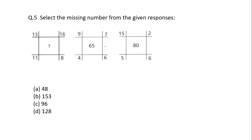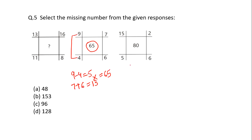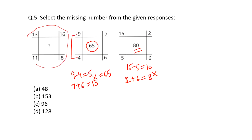Select the missing number from the given responses. Let's find the pattern: 9 − 4 = 5, and 7 + 6 = 13, and 5 × 13 = 65 — that is the middle number. Also, 15 − 5 = 10, and 2 + 6 = 8, and 10 × 8 = 80. So the same pattern is followed: 30 − 12 = 18 — wait, 30 − 12 = 18 and 16 + 8 = 24, so the middle number is 18 × 24... actually 2 × 24 = 48. The correct answer is option A.